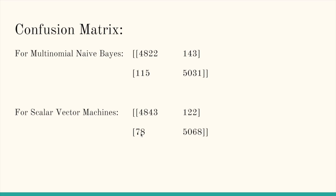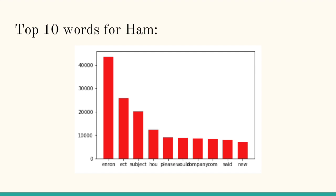Support Vector Machines perform better than Multinomial Naive Bayes because the number of error messages is less. For the top 10 words for ham, the results are: Enron, ECT, subject, how, please, and so on. The word 'Enron' is counted about 45,000 times.